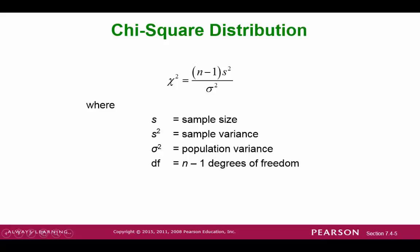Informally, the chi-square distribution can be defined as: chi-square equals n minus 1 times s-squared divided by sigma-squared, where s-squared is a sample variance and sigma-squared is a population variance. This distribution is actually a lot more complicated, and it involves a degrees of freedom measurement.